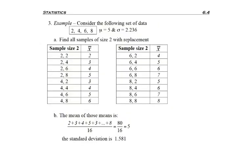Now let's consider the following set of data. Imagine I have the numbers 2, 4, 6, and 8. Let's say I have 4 kids and these are their ages — a 2-year-old, a 4-year-old, a 6-year-old, an 8-year-old. If I found the average age of my kids, I would get 5 years old, and the standard deviation would be 2.236 — that's on average how far you're off if you're not a 5-year-old.